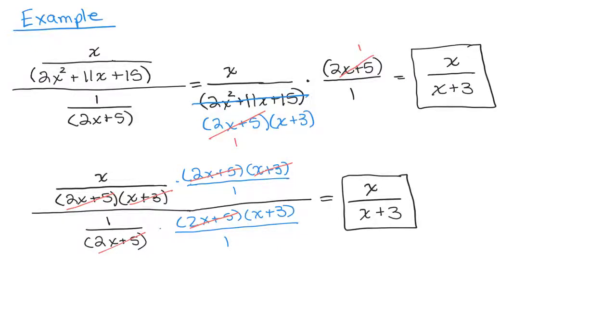Personally, when I have a single fraction in the numerator and a single fraction in the denominator, I think it's usually easier to just go ahead and multiply by the reciprocal. But it's up to you. Both methods give you the right answer.